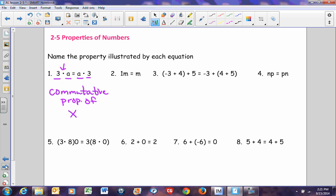Number 2 says 1 times m equals m. When you multiplied something by 1, you did not change the answer. It stayed as m. So this is your multiplicative identity or your identity property of multiplication.